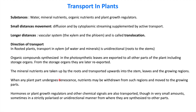Mineral nutrients are taken up by roots and transported upward into stems, leaves, and growing regions. When any part of a plant gets damaged, the plant withdraws its nutrients from that part and transports them to the growing region of the plant.